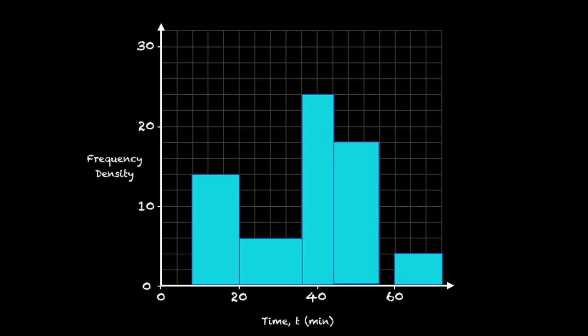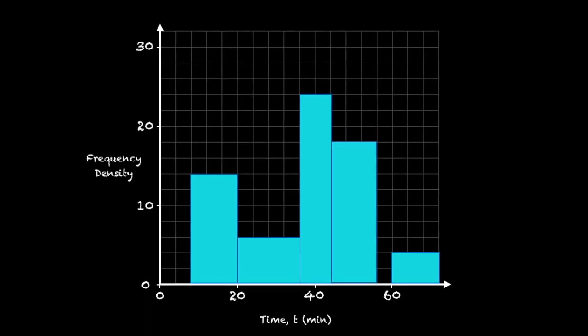On the x-axis you're going to have a continuous variable because histograms only represent continuous data. And so time or distance are common to see on the x-axis.